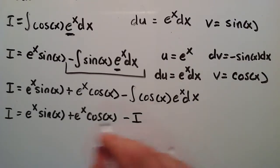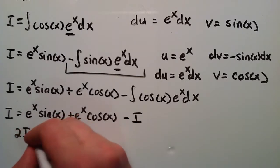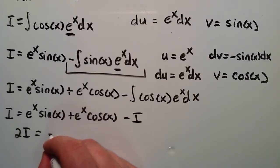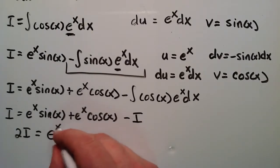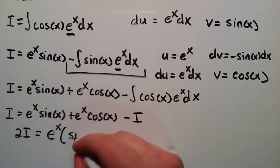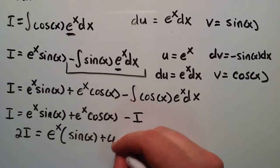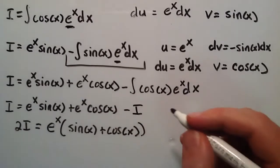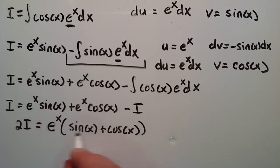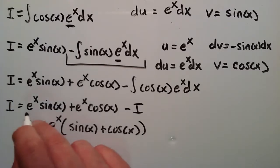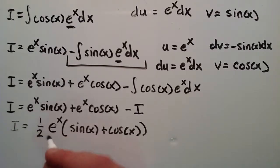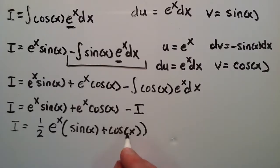So now, if we add i to both sides, we simply have 2i is equal to, and then we can factor e to the x out of these two terms here. So 2i is equal to e to the x times sine x plus cosine x. And then we can just go ahead and divide each side by 2. So dividing each side by 2 just basically gives us i is equal to 1 half e to the x sine x plus cosine x.